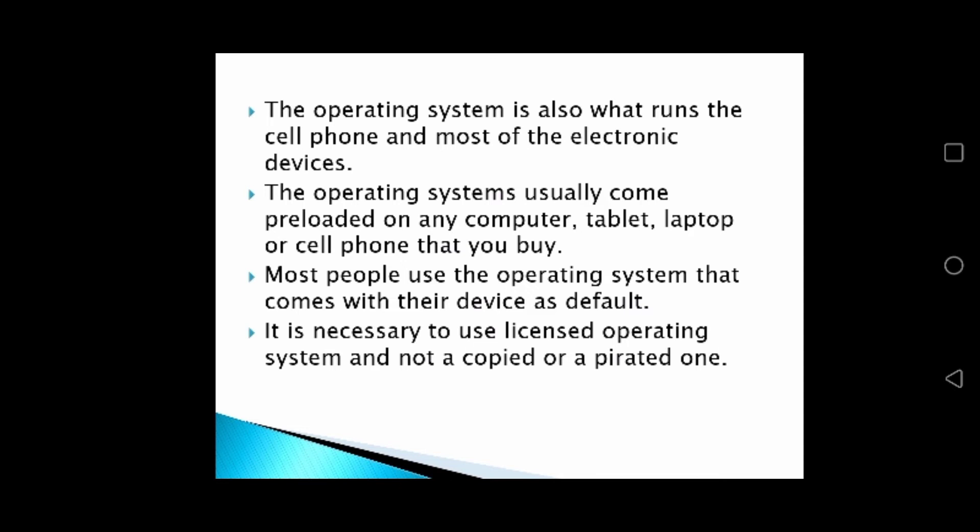Examples of operating systems are Android, Microsoft, Mac, etc. The operating system usually comes preloaded on any computer, tablet, laptop, or cell phone that you buy. Most people use the operating system that comes with their device as default. It is necessary to use a licensed operating system and not a copied or pirated one — when we install the operating system in our device, we should purchase it rather than use a pirated version.